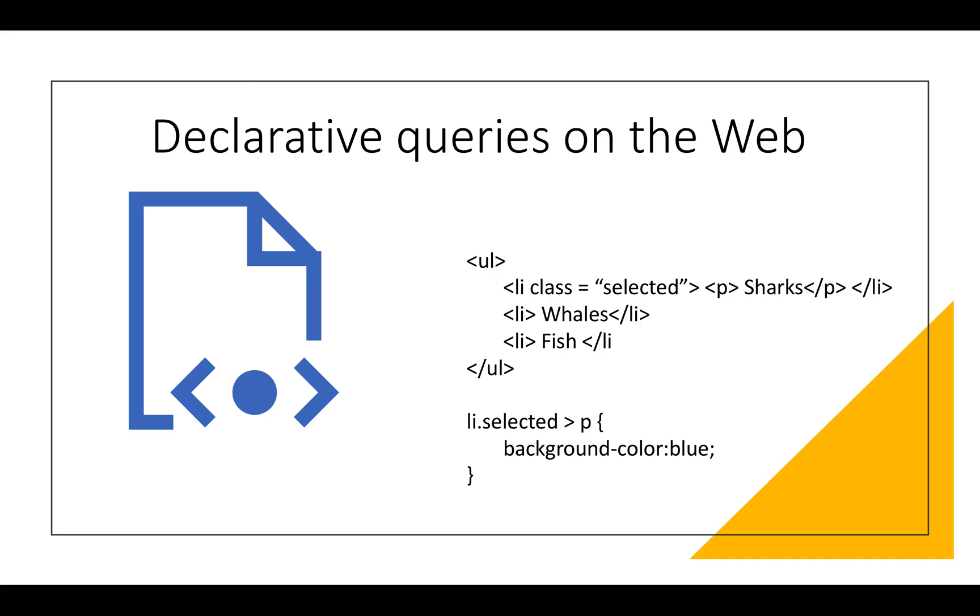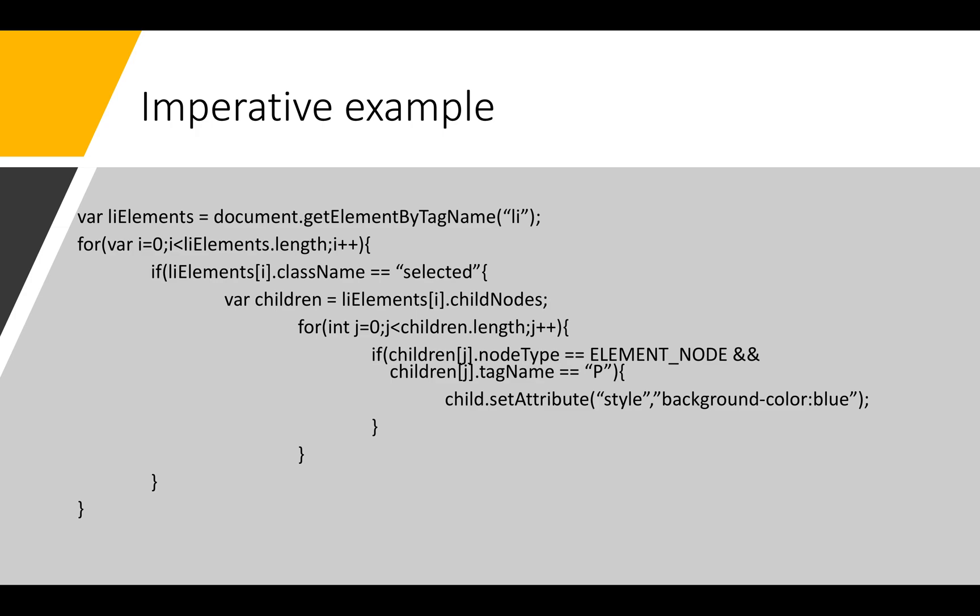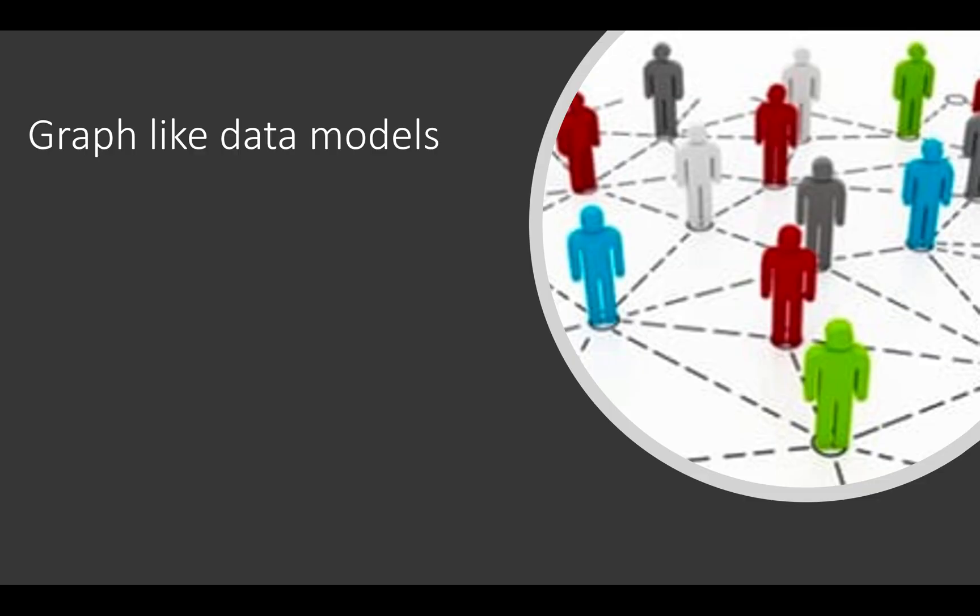But if we have to do the same thing in imperative language, it can be a little bit difficult. Because if you try to do it in JavaScript, which is an imperative language, we have to select all the elements which has the tag name li and we have to find the children of it which has a tag name p and change its background color. So the code is simpler in declarative language, whereas it can be difficult in imperative languages.